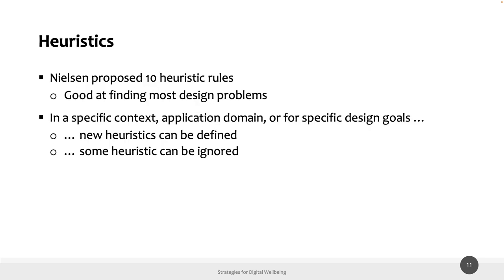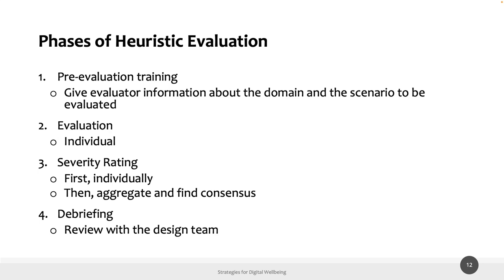Nielsen proposed a set of 10 well-known heuristic rules that are good at finding most design problems about usability. In specific contexts like digital well-being, new heuristics can of course be defined, and some heuristics can also be ignored depending on the context in which we are using this evaluation technique.